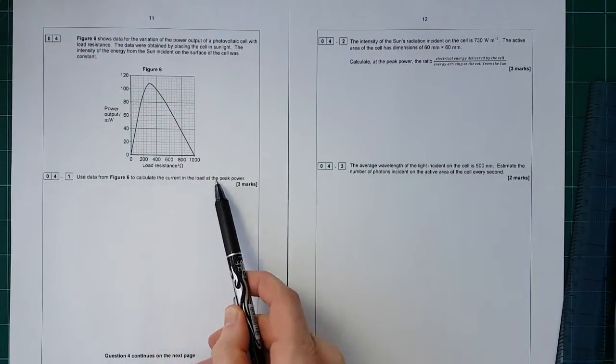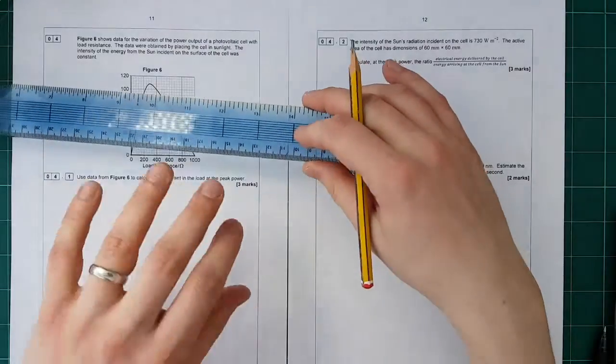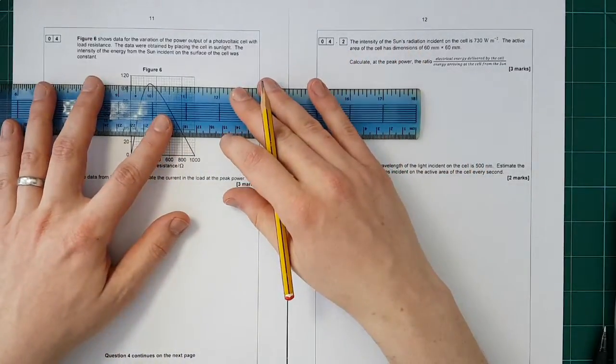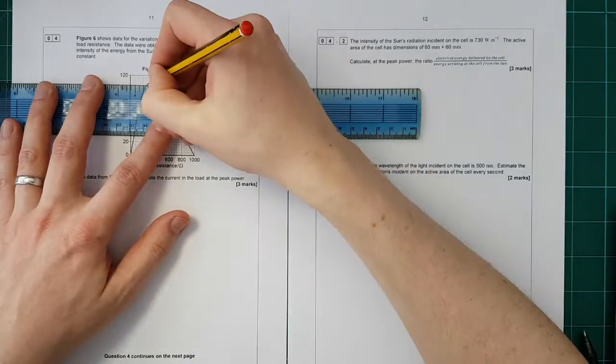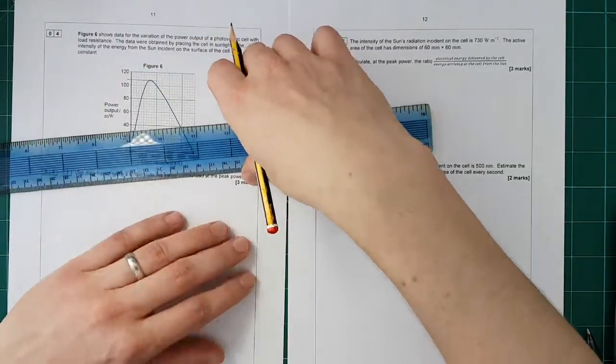Use data from figure 6 to calculate the current in the load at peak power. To do that, we need to find out where peak power is. Place your ruler like this, put it on the peak, draw along there.